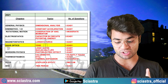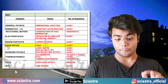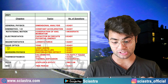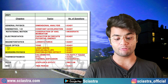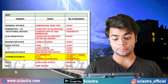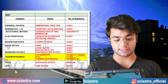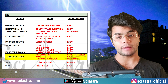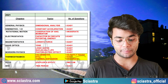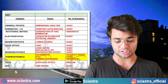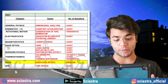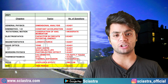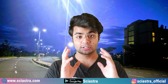Wave optics, based on Young's double slit experiment, one easy question came. Modern physics: three easy questions came — all easy — based on logic gates, nuclei half-life, and photoelectric effect. Thermodynamics: one slightly tough, one slightly easy, and one moderate level question came on calorimetry, kinetic theory of gases, and thermal expansion. Finally, waves: Doppler effect, one medium level question came, and SHM based on time period, one easy level question came.